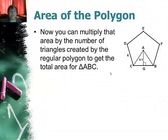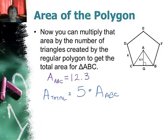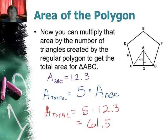Now I know that I can create 5 of these triangles, so all I have to do is take this area and multiply it by 5 to get the total area. So 5 times 12.3 is 61.5 units squared.